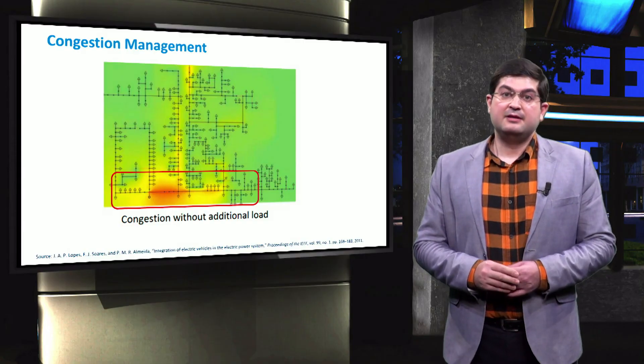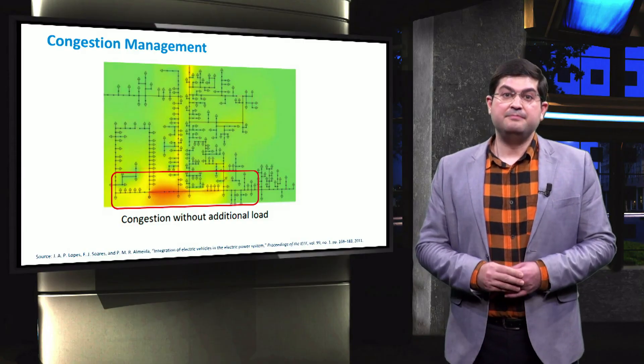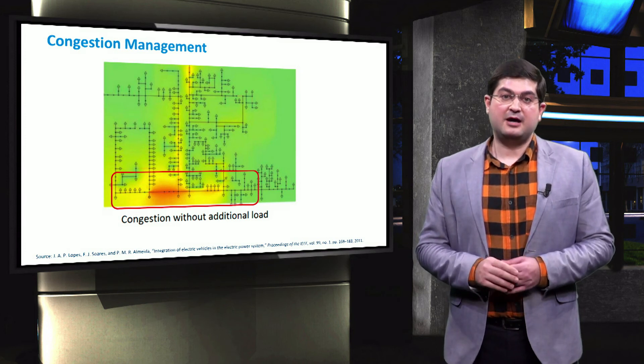As shown in the figure, the lines of a distribution feeder become congested during load peak hours.